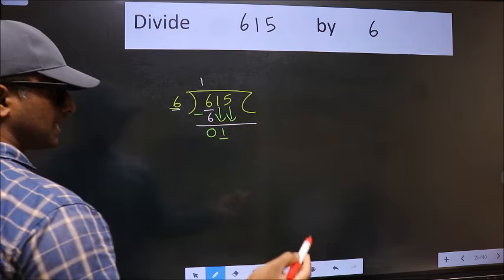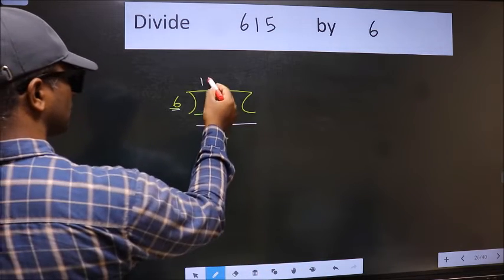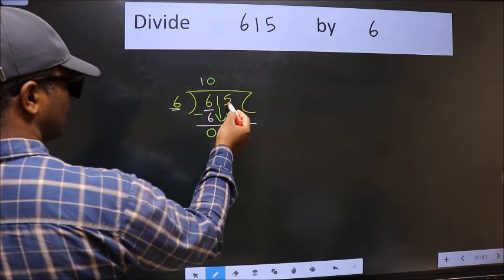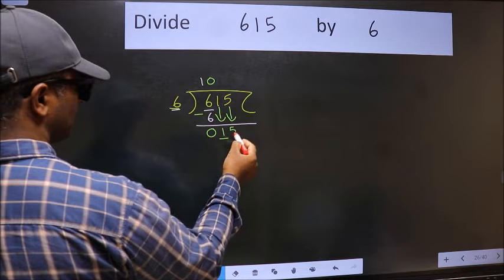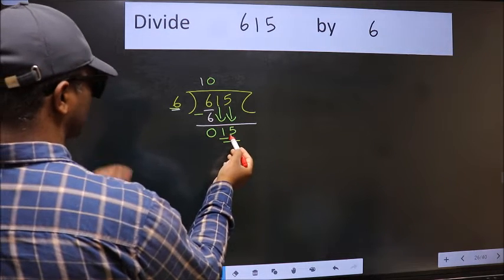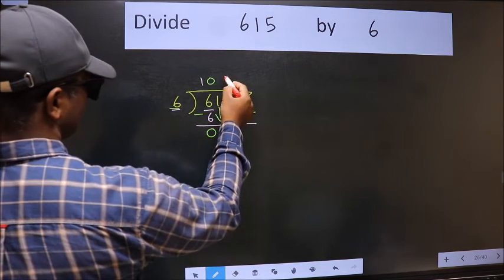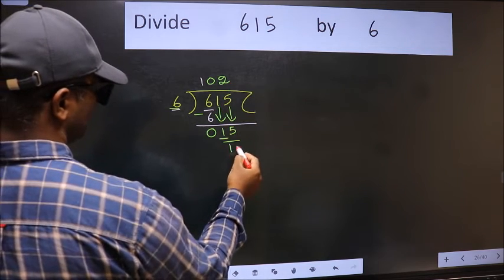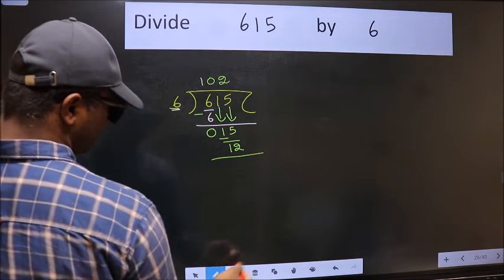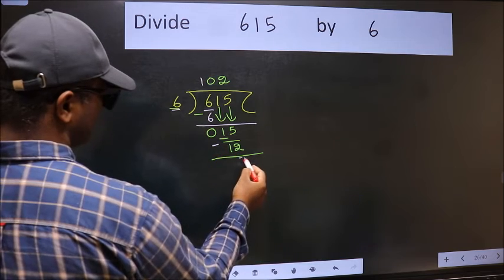And the rule to bring down the second number is we should put 0 here. Then only we can bring this number down. Now 15. A number close to 15 in the 6 table is 6 twos, 12. Now we should subtract. We get 3.